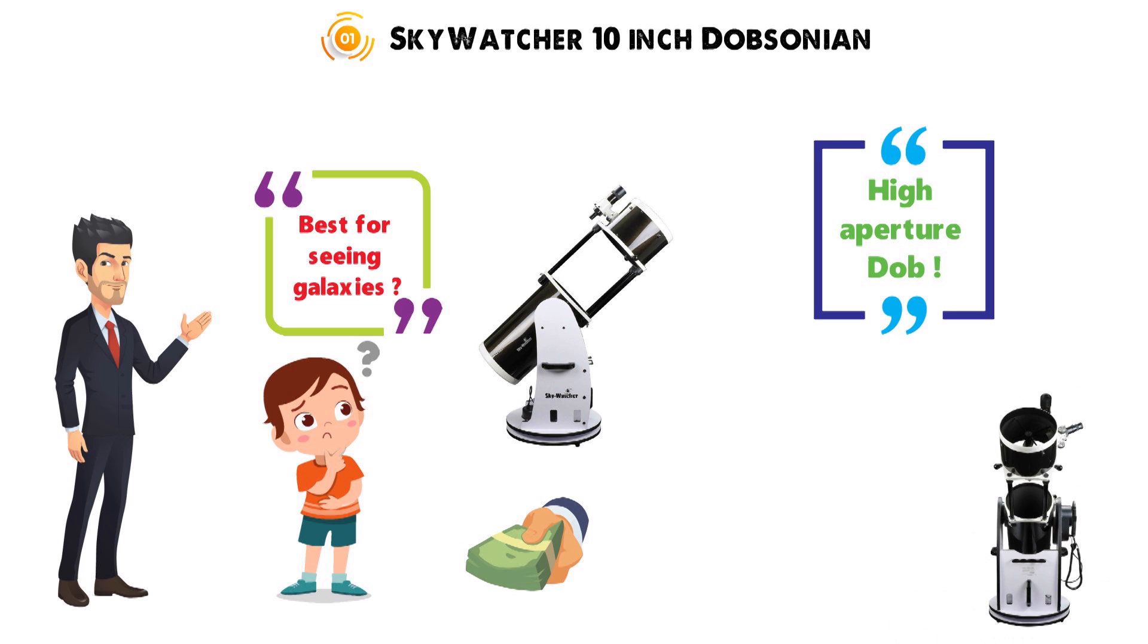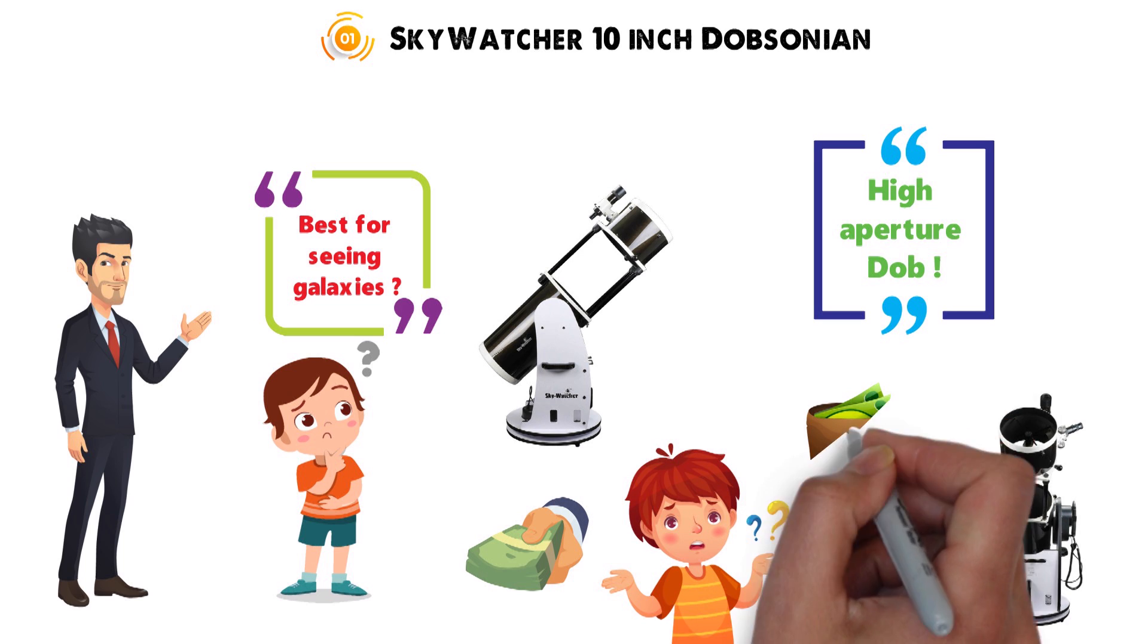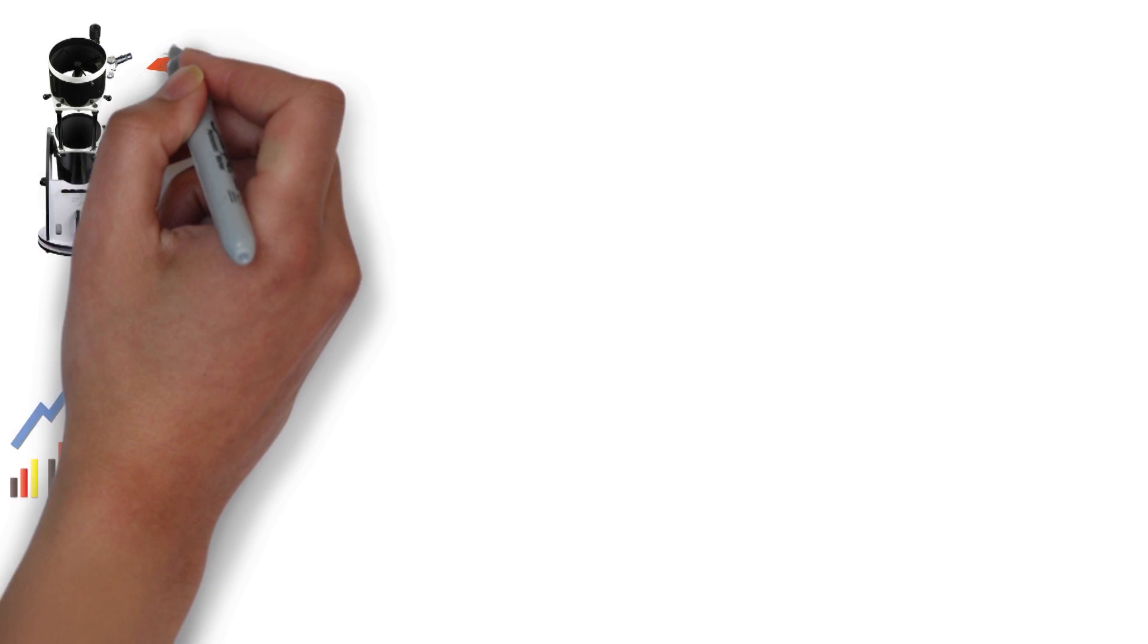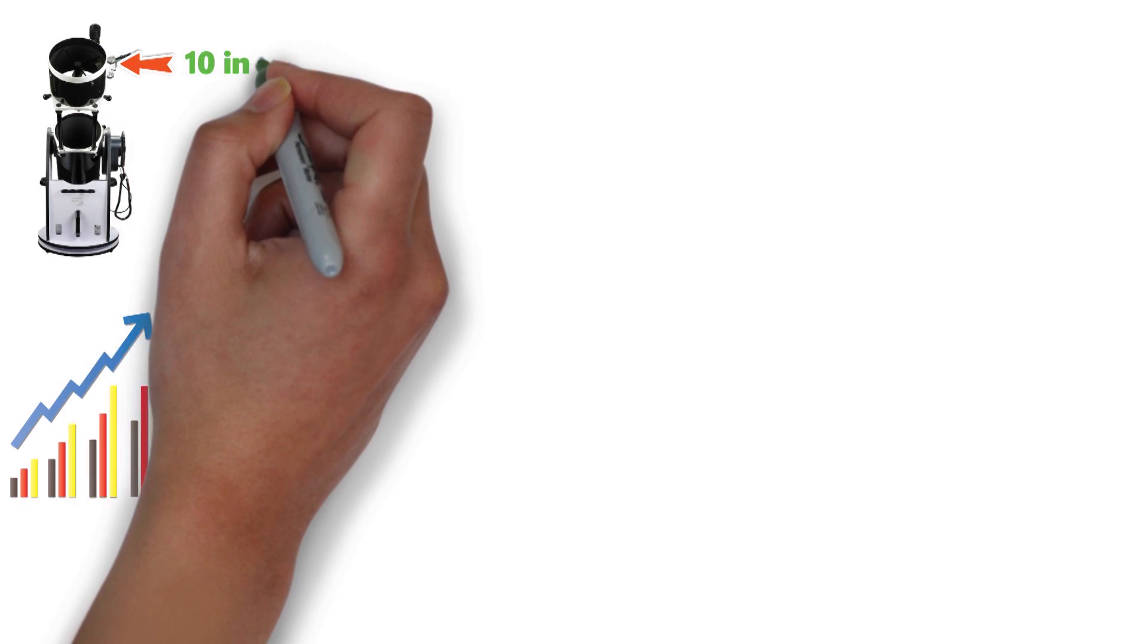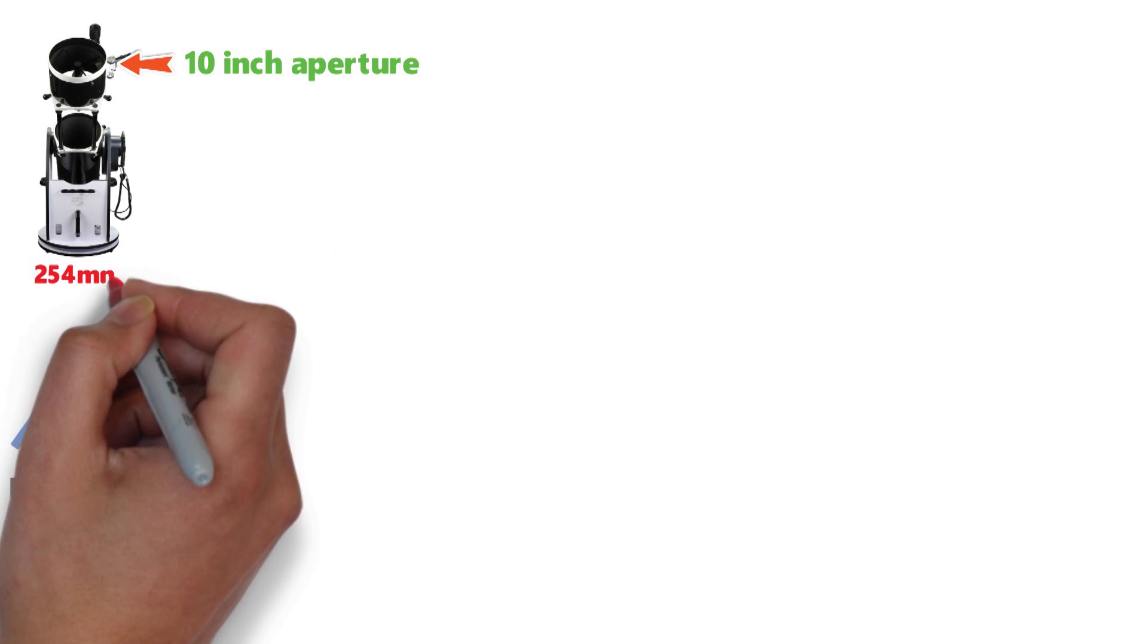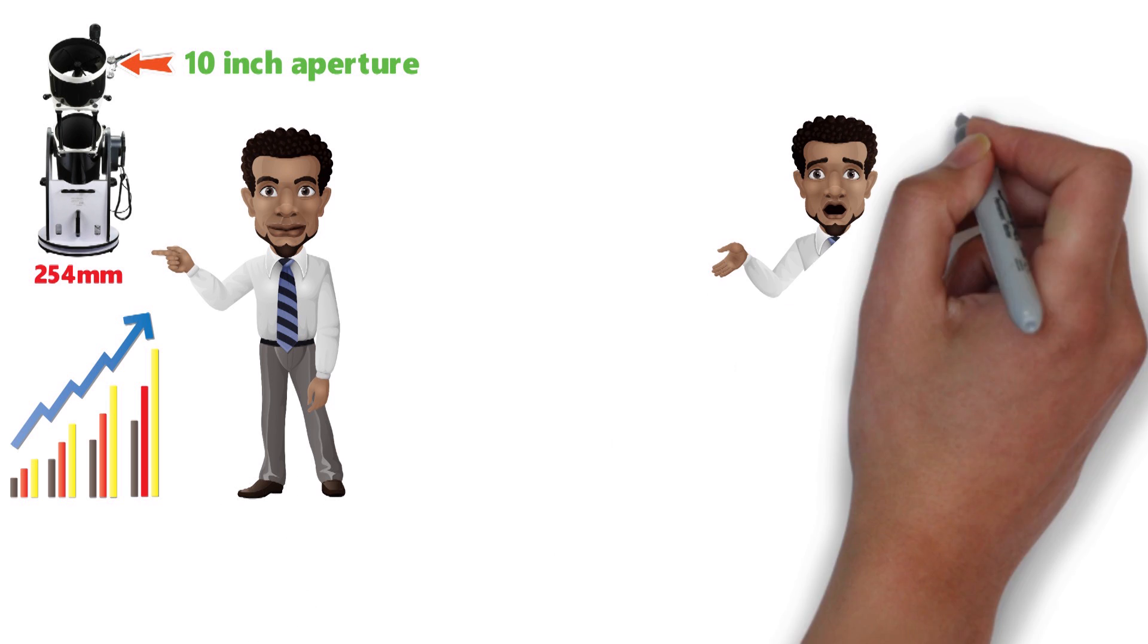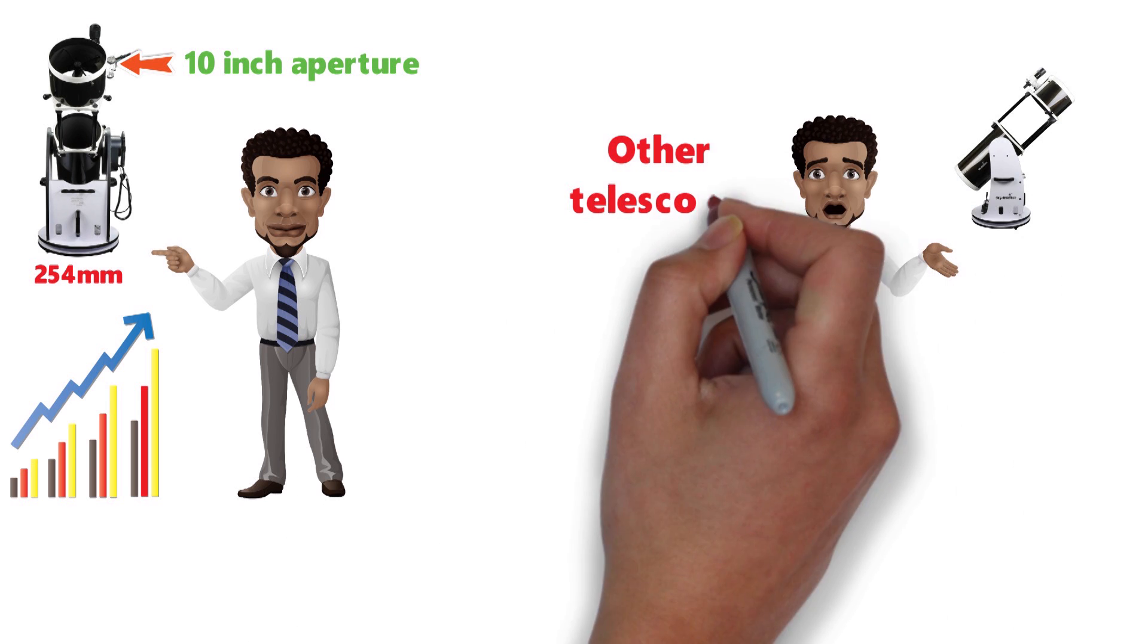The Skywatcher is a good example of exactly what you can get if you're looking in the mid-range ballpark of prices. It is a step up in class on cheaper scopes for a few reasons. It's got a 10-inch aperture, this is 254mm, this is significantly more than other telescopes that you'll find, and you'll definitely notice the difference.